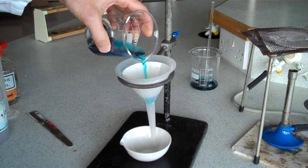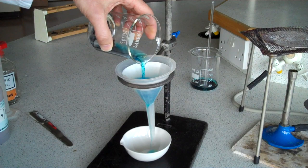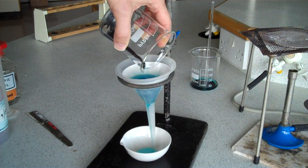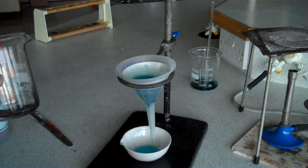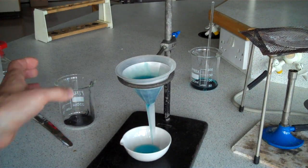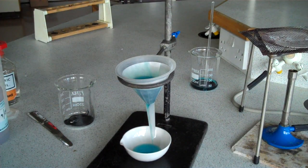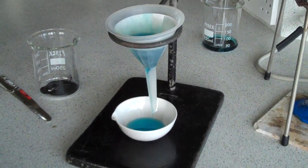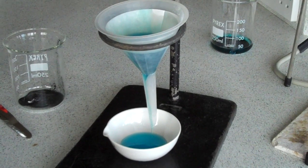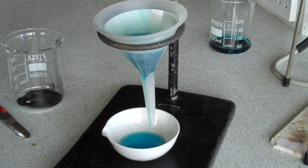Pour the copper solution. You can see there's a lot of black solid left behind. But we're filtering nice and rapidly there. And within a few seconds, we should have a nice solution of copper sulphate.